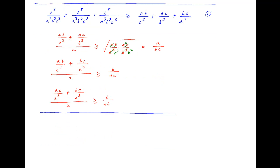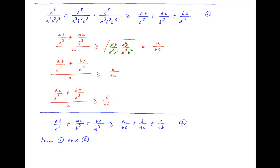Adding these three inequalities, we get: ab/c³ plus ac/b³ plus bc/a³ is greater than or equal to a/bc plus b/ac plus c/ab. Let's call this Result 2. Now, combining Results 1 and 2, it follows that the left-hand side of Result 1, which is a⁸ + b⁸ + c⁸ upon a³b³c³, is greater than or equal to the right-hand side of Result 2, which is a/bc + b/ac + c/ab. Let's call this Result 3.